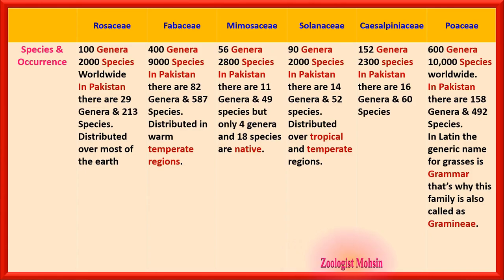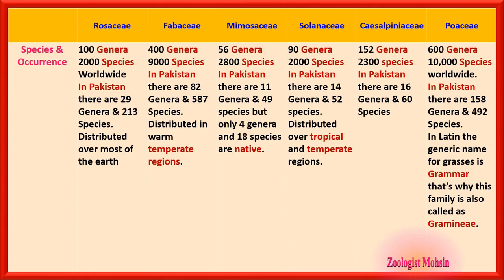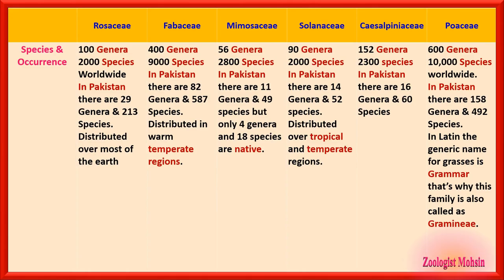Regarding distribution: Fabaceae is found in the temperate region. In Mimosaceae, native species are those found only in a particular area; in Pakistan there are almost four genera and 18 native species of Mimosaceae. Solanaceae is present in tropical and temperate regions. Poaceae's second name is Graminae — in Latin the generic name for grasses is 'gramen,' which is why this family is also called Graminae.